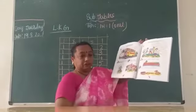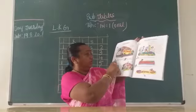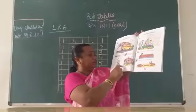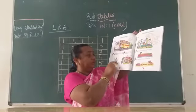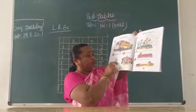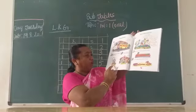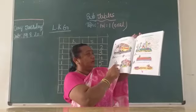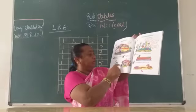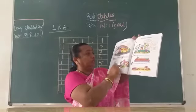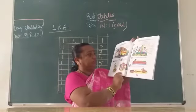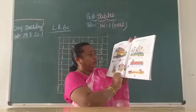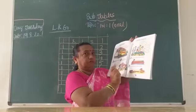Inside and outside. Now here, circle the bird inside the cage. Observe this picture — the parrot is inside, the sparrow is outside. We have to circle the bird inside. Now look at this picture: tick the boy outside the house. Tick it.